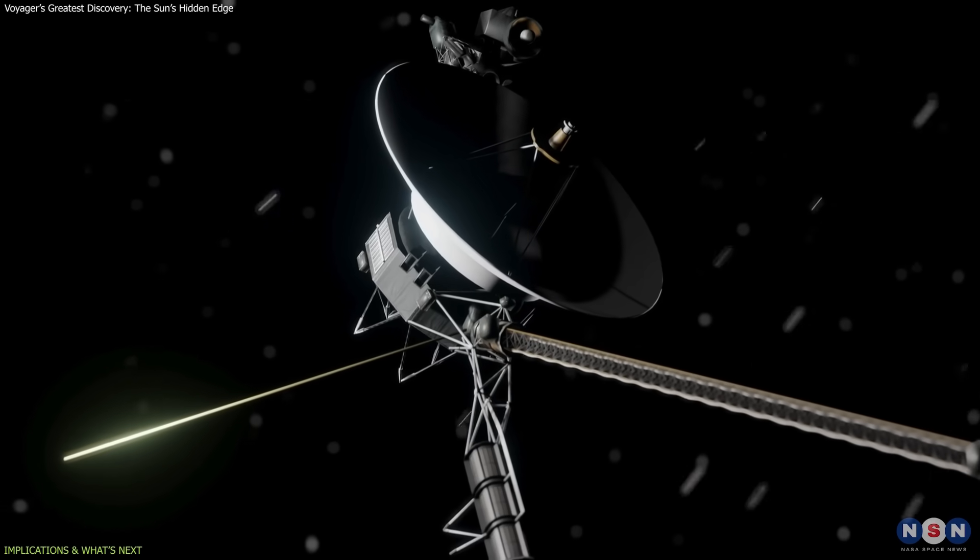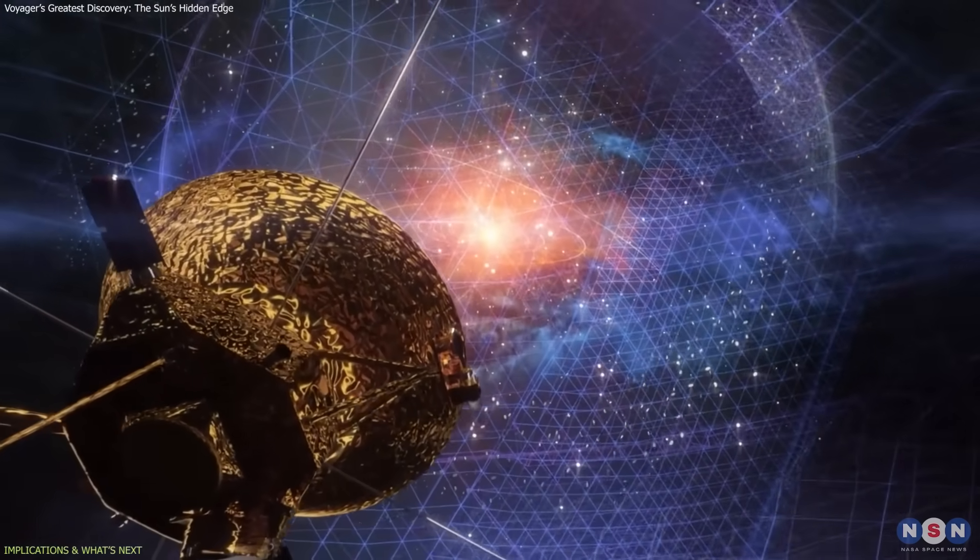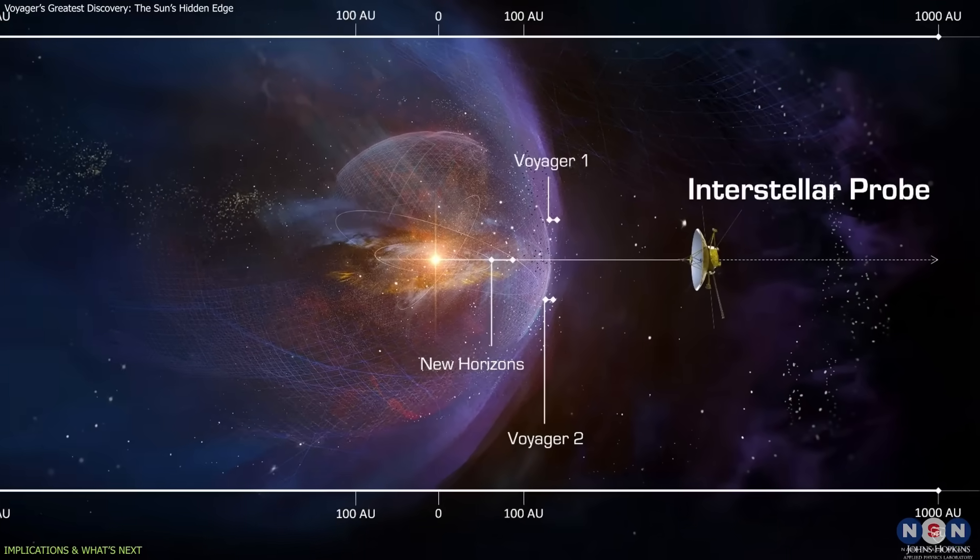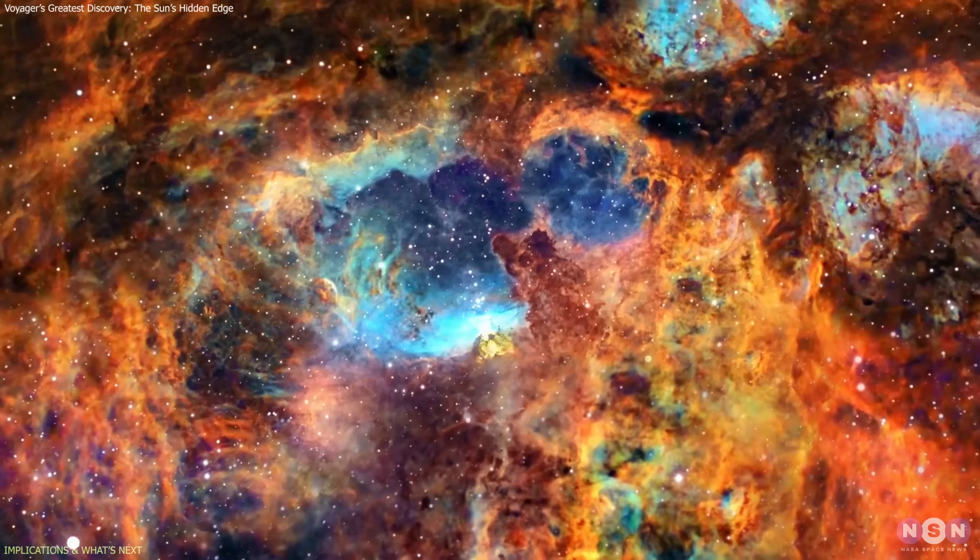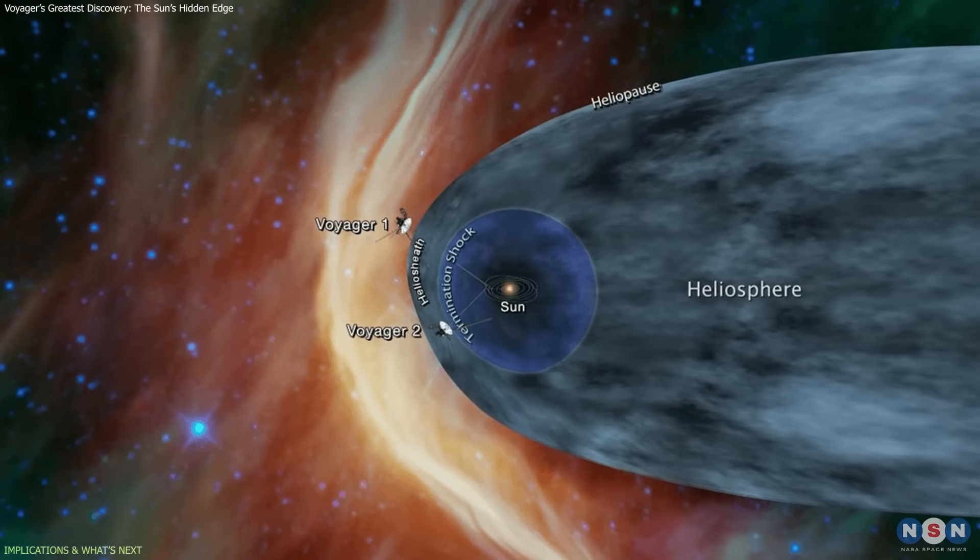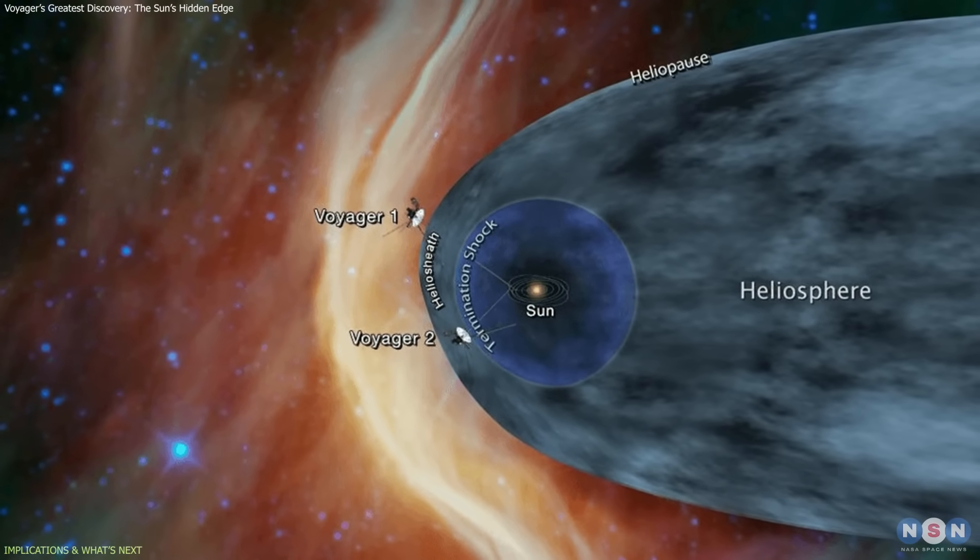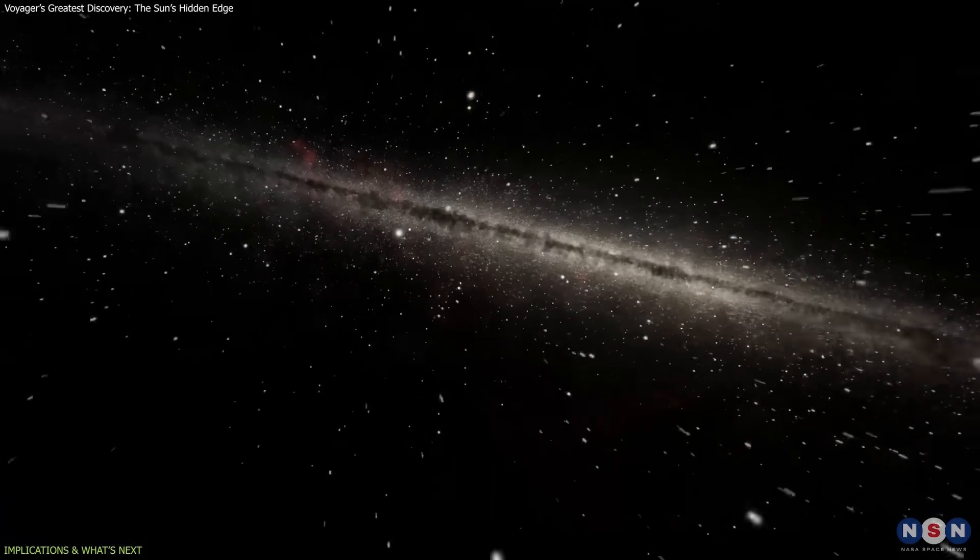Future missions aim to continue where Voyager leaves off. NASA's proposed interstellar probe would travel three times farther, equipped with modern sensors capable of mapping the heliosphere's full structure and exploring the interstellar medium in detail. Such missions could reveal whether the wall Voyager crossed is unique to our Sun or a universal feature surrounding stars throughout the Milky Way.